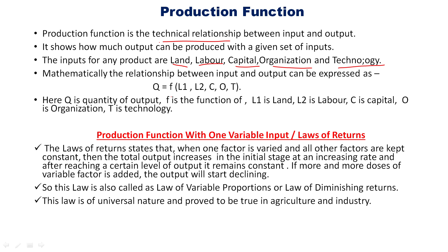Mathematically, the relationship between input and output can be expressed as Q = F(L1, L2, C, O, T). Here L1 is referred to as land, L2 is referred to labor, C is referred to capital, O is referred to organization, and T is referred to technology. These are all the basic fundamental inputs required for any production activities taken up by the businesses.